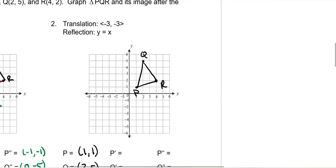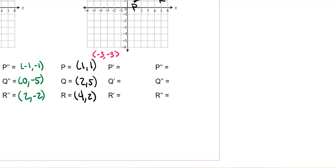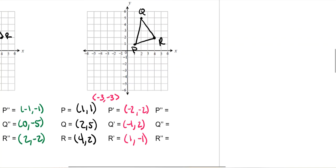For number two I'll do it algebraically first, then graph. The translation vector is negative three, three, so we subtract three from the x-values and add three to the y-values. One minus three is negative two; two plus three is five; negative two minus three is negative five — wait, we subtract three from both x and y: P prime is negative two, negative two; Q prime is negative one, two; R prime is one, negative one.